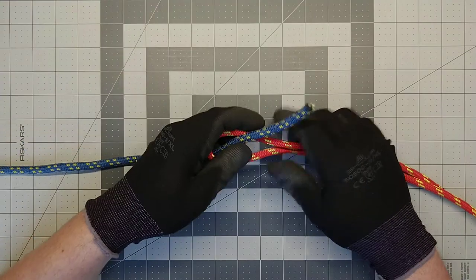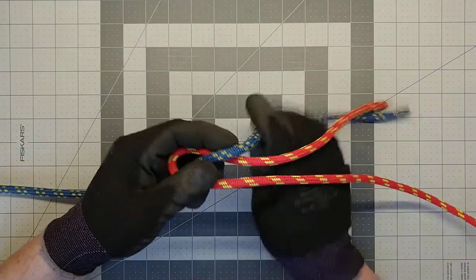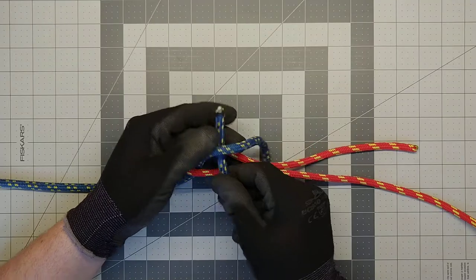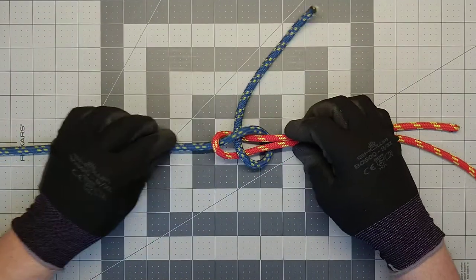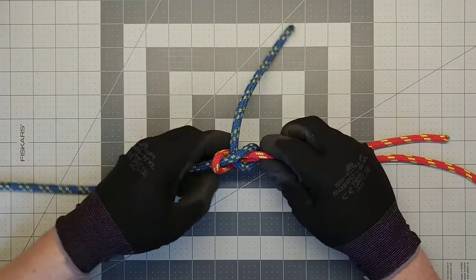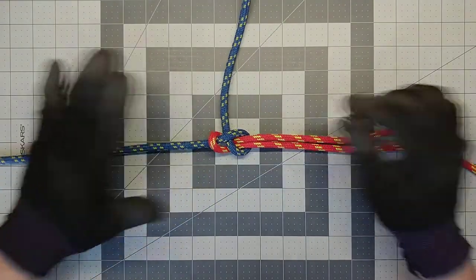Just like that. So this knot is great for joining two ropes of unequal diameter. I have some Sterling HTP Ultra here, half-inch ropes.